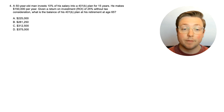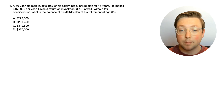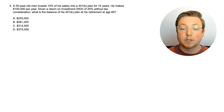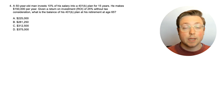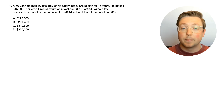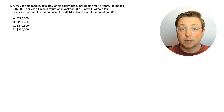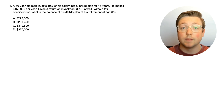Here is question 4. A 50-year-old man invests 10% of his salary into a 401k plan for 15 years. He makes $150,000 per year. Given a return on investment of 25% without tax consideration, what is the balance of his 401k plan at his retirement at age 65? This is a 401k — pre-tax money — so pause the video and try it based on what we've learned about ROI.